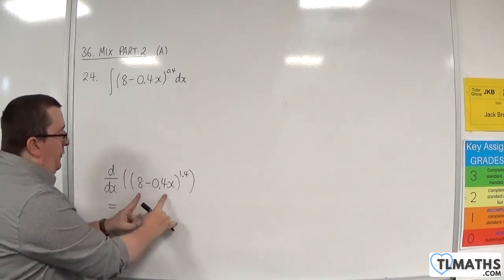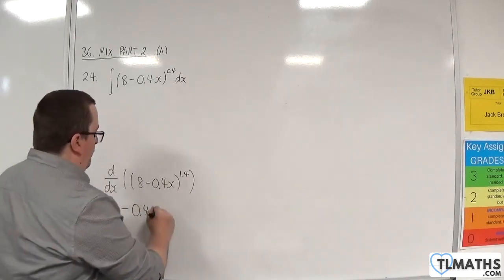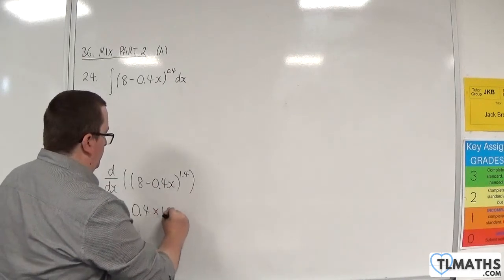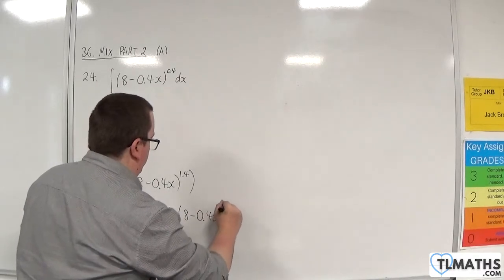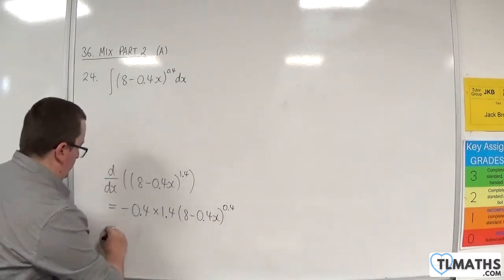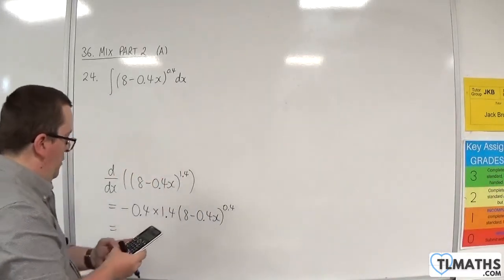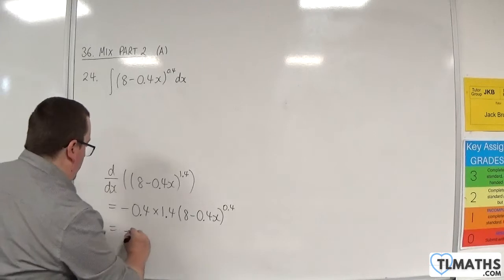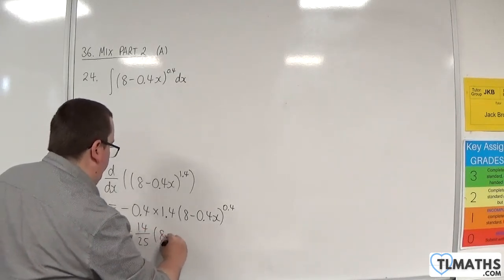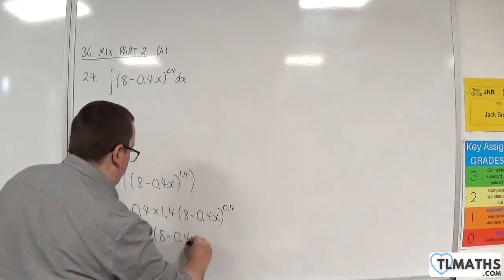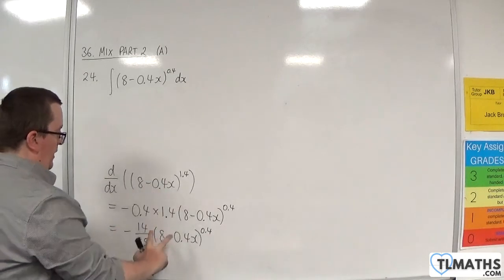The derivative of the inside is minus 0.4, which comes out to the front using the chain rule. And the 1.4 will come down to the front, and I'm going to take 1 from the power. OK, so we have minus 0.4 times 1.4 is minus 14 over 25, like so.